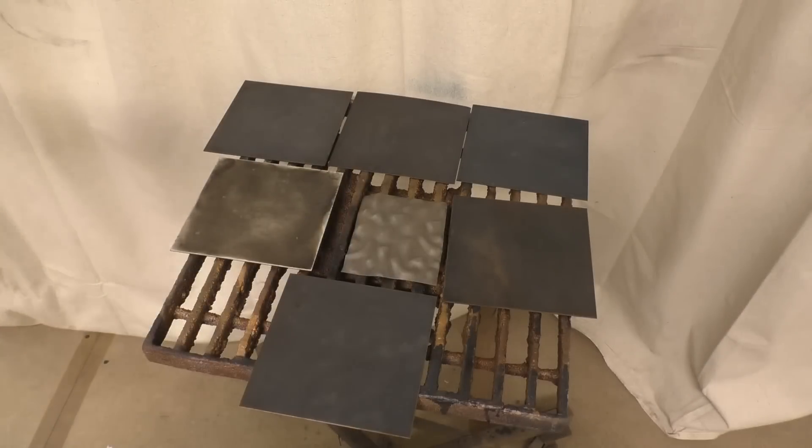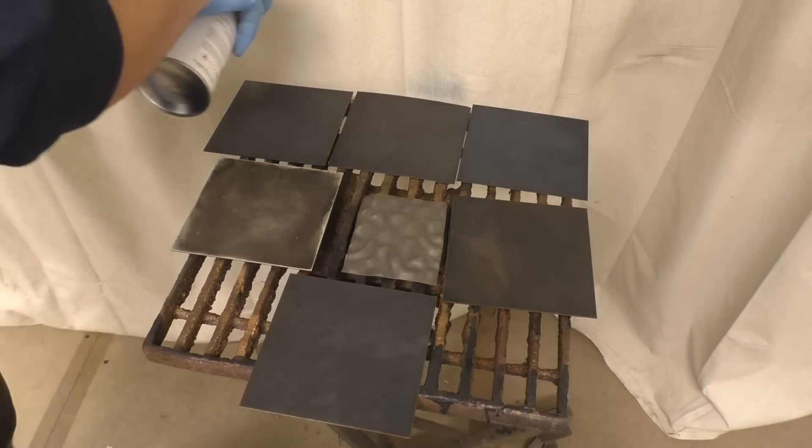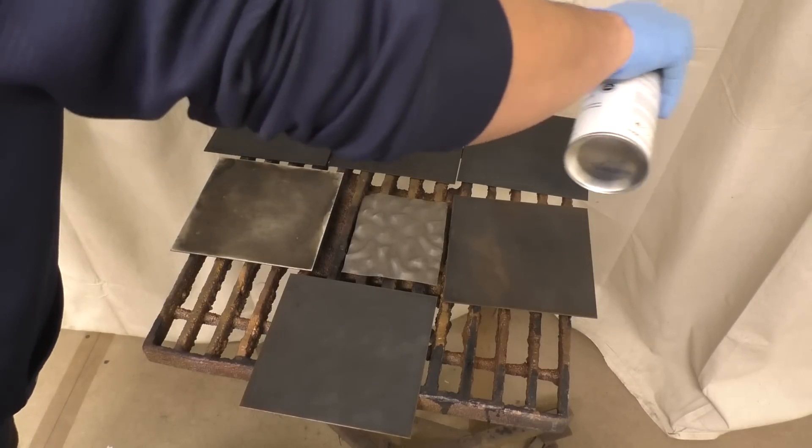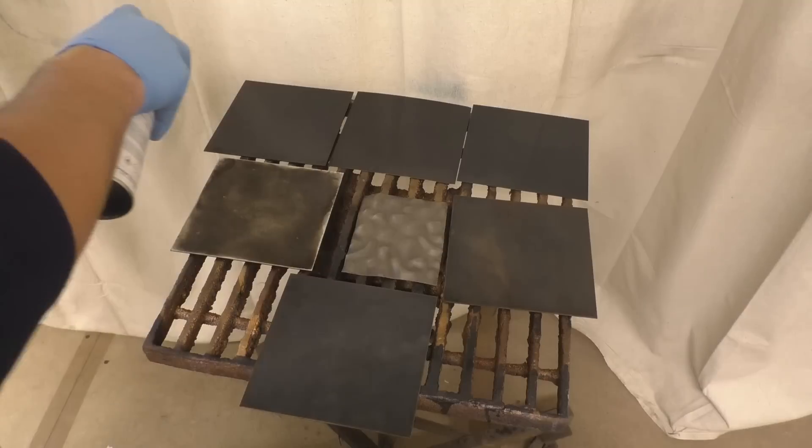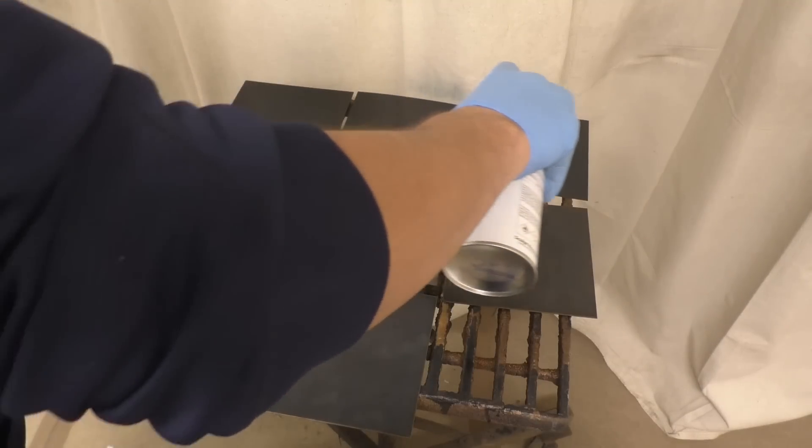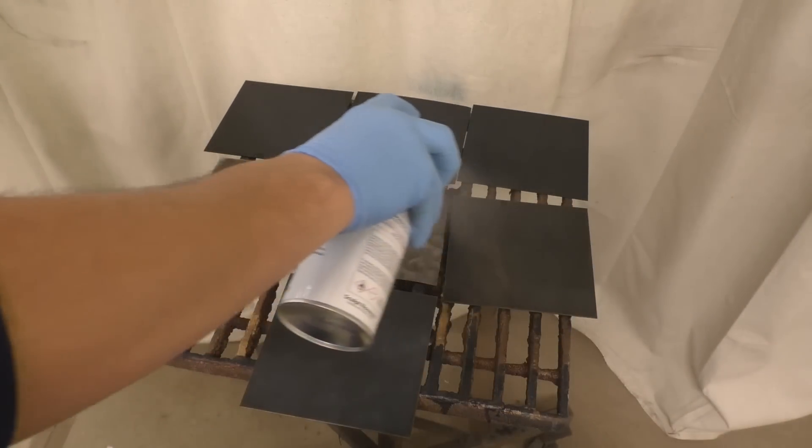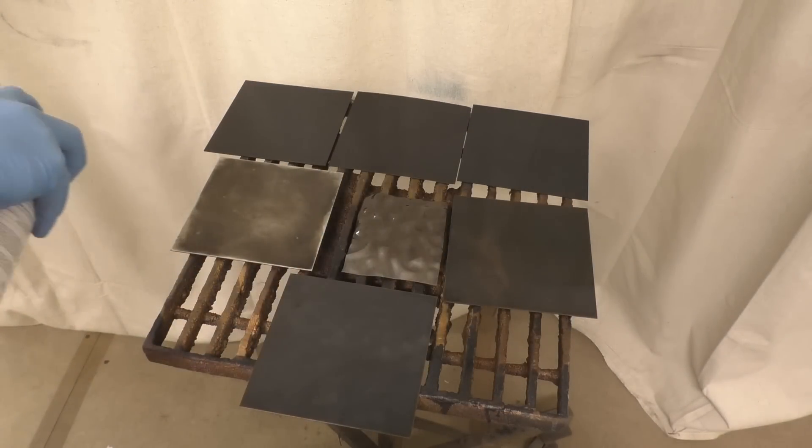Now once we have all these patinated we've got to clear coat them. I'm a big fan of the clear coats so I usually go with Clear Guard or EverClear, but a lot of people end up liking to do the wax or the oil on these and that works just fine. Here we're just going to use the Clear Guard.